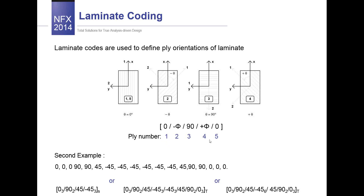This means we have five plies: ply number 1, ply number 2, ply number 3, ply number 4, and ply number 5. For the first ply the angle equals 0, for ply number 2 we have minus theta, for ply number 3 the material direction is rotated about 90 degrees, then plus theta and 0. These laminates are listed in sequence starting from the tool surface, and each lamina is labeled by its ply orientation and separated by its layers.